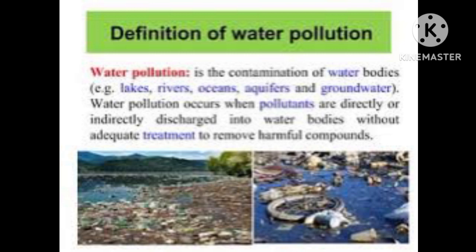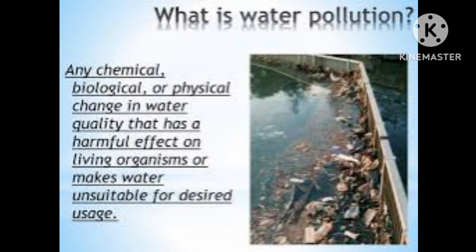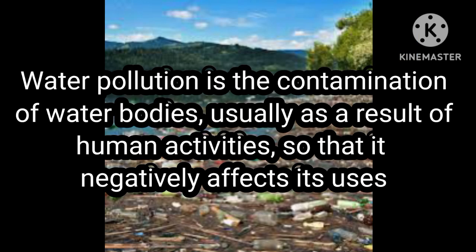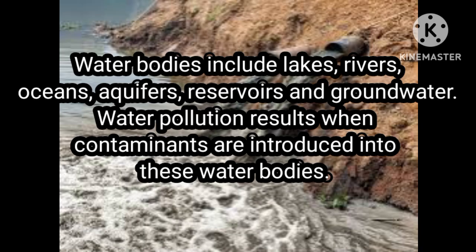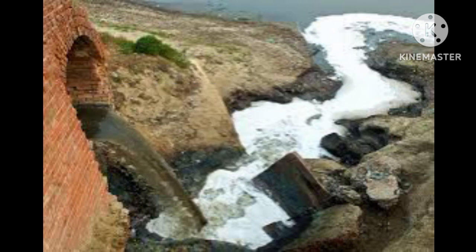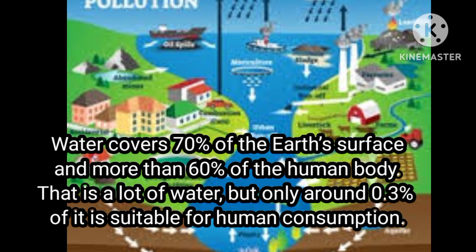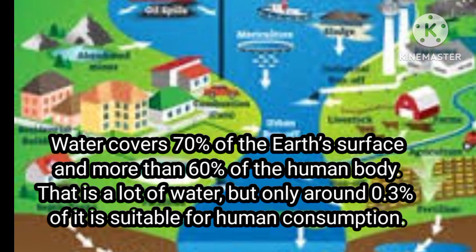Next we see the topic water pollution. Water bodies like rivers and ponds are being made impure. Any chemical, biological or physical change in the water is called water pollution. Water pollution is the contamination of water bodies, usually as a result of human activities. Water bodies include lakes, rivers, oceans and groundwater. Water makes up 70% of the earth's surface and more than 60% of the human body, but only 0.3% of it is suitable for human consumption.